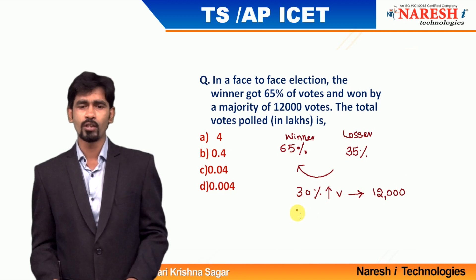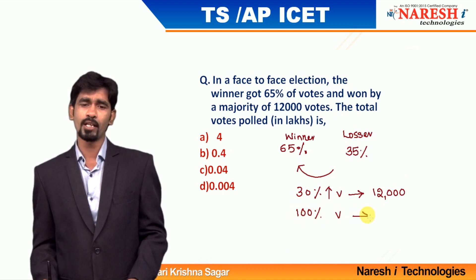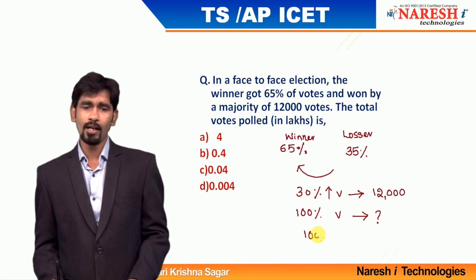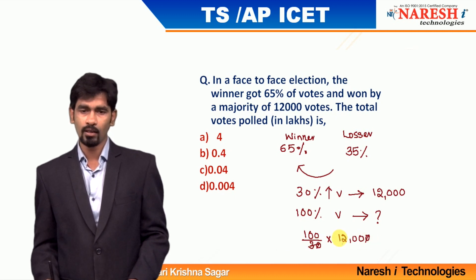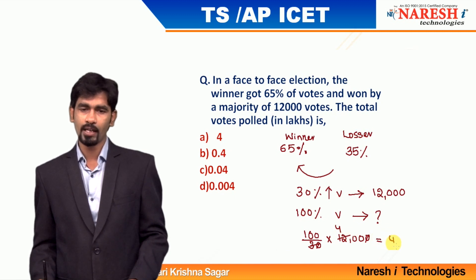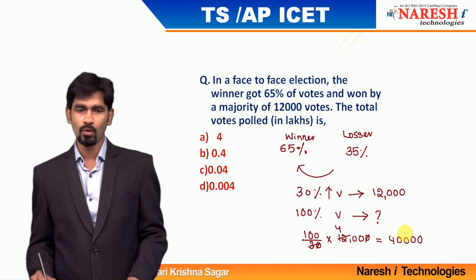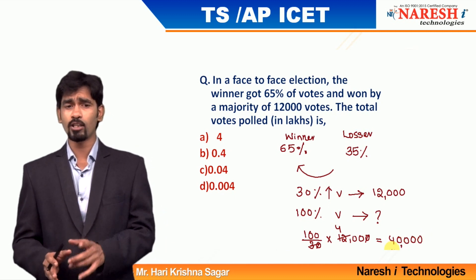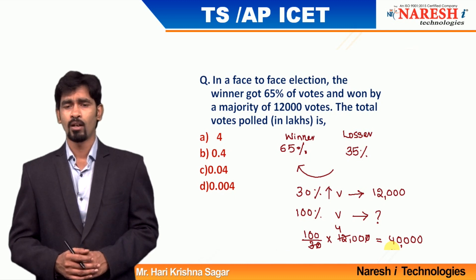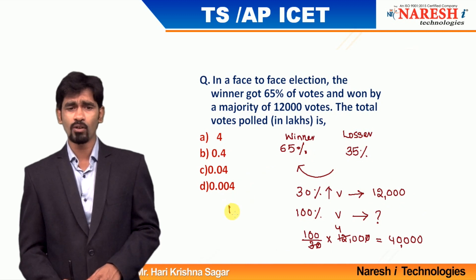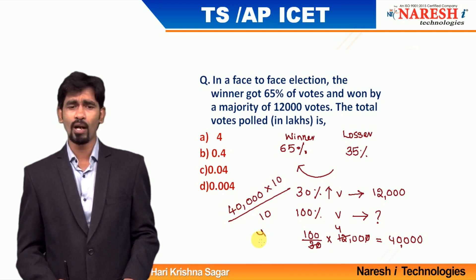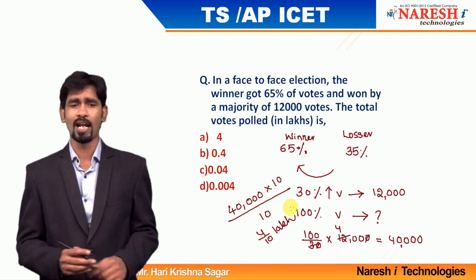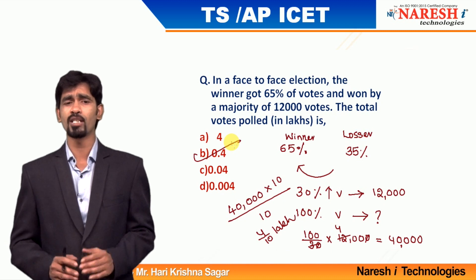That means whatever extra votes the winner received, that is given as 12,000. In this unitary method, connect the number with the equivalent percentage, observe the required quantity in terms of percentage, and get it in the form of a number. 30 percentage of the votes is equal to 12,000. We need to find 100 percentage of the votes. So: 100 divided by 30 into 12,000 — the zeros cancel, giving 400 into 100 = 40,000. Since the answer must be in lakhs: 40,000 equals 0.4 lakhs. Mark your answer choice as option B: 0.4 lakhs.